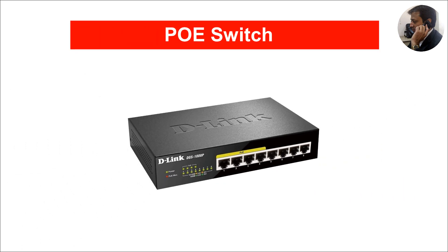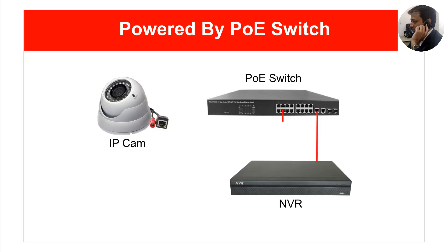The third method involves the use of a PoE switch. Each port of a PoE switch usually provides an interface for both data and power, meaning that the ethernet cable connected to the port carries both data and power for the camera. So there is no need to lay separate cables for camera power.